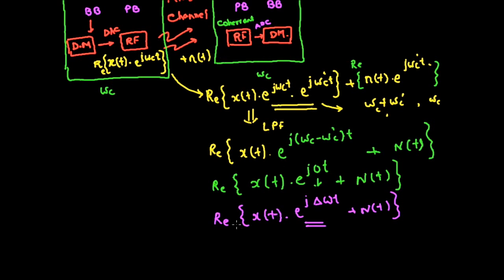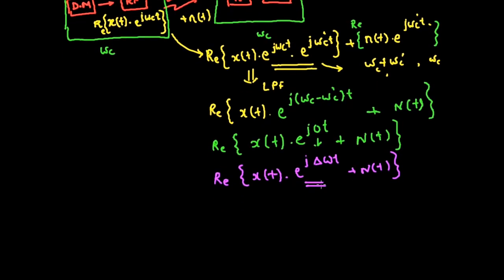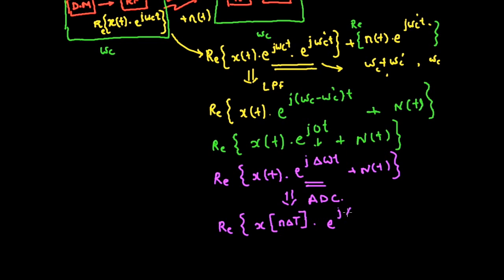This phase component comes from the down conversion process through the RF section. By the time the signal hits the baseband and the analog-to-digital converter gives you discrete samples, it already has this phase. To get the discrete equivalent, I replace t with n·Δt, giving x(n) · e^(j·Δω·n·Δt) + n(n). I omit Δt from the index notation for representation, keeping Δt in the exponent since it has actual values.